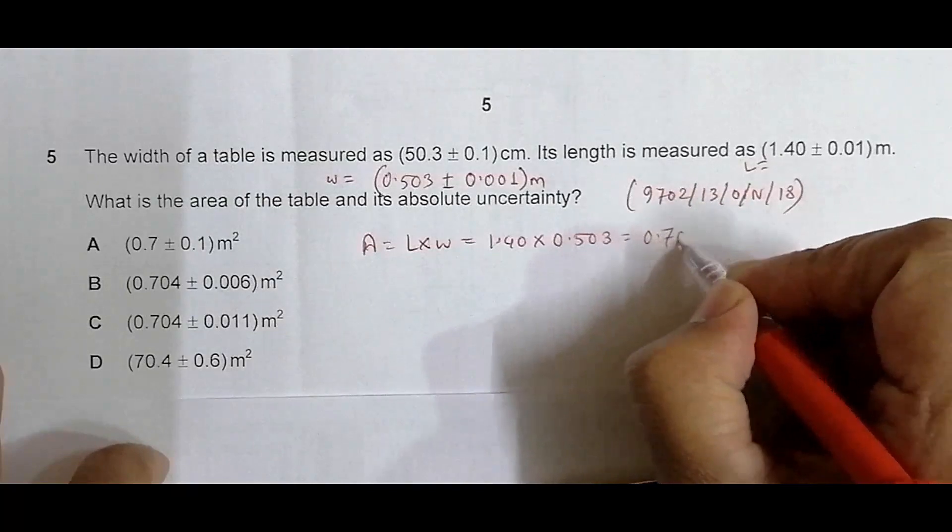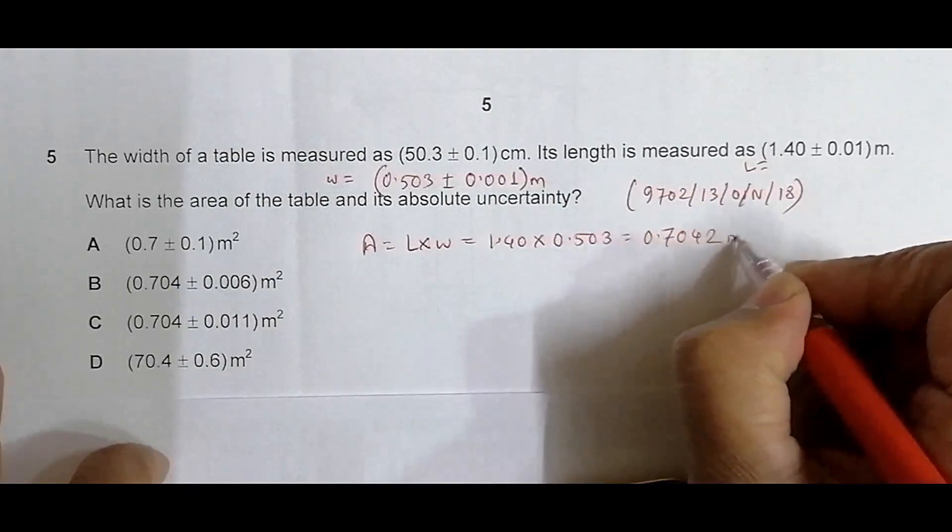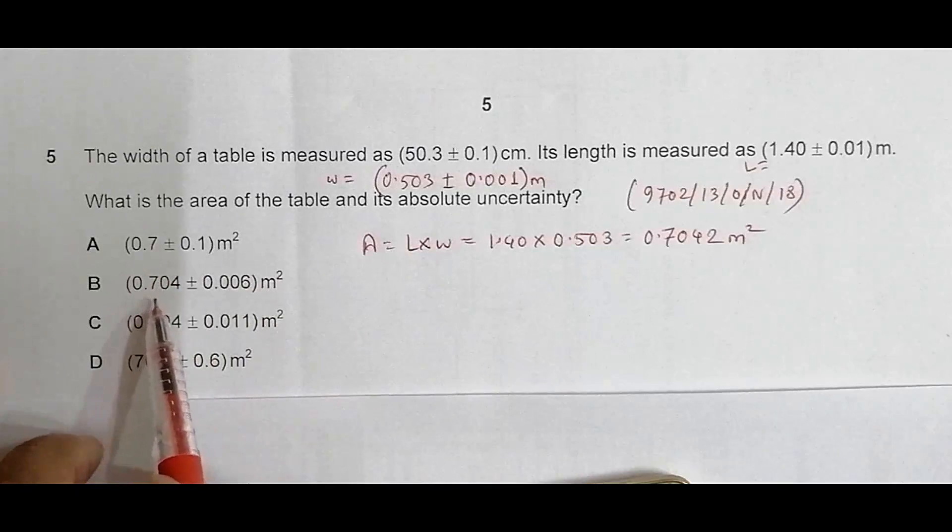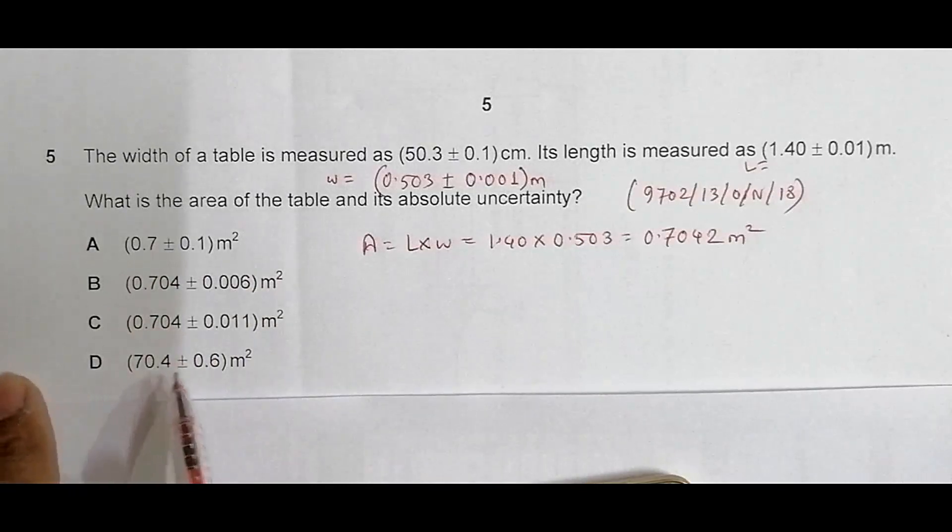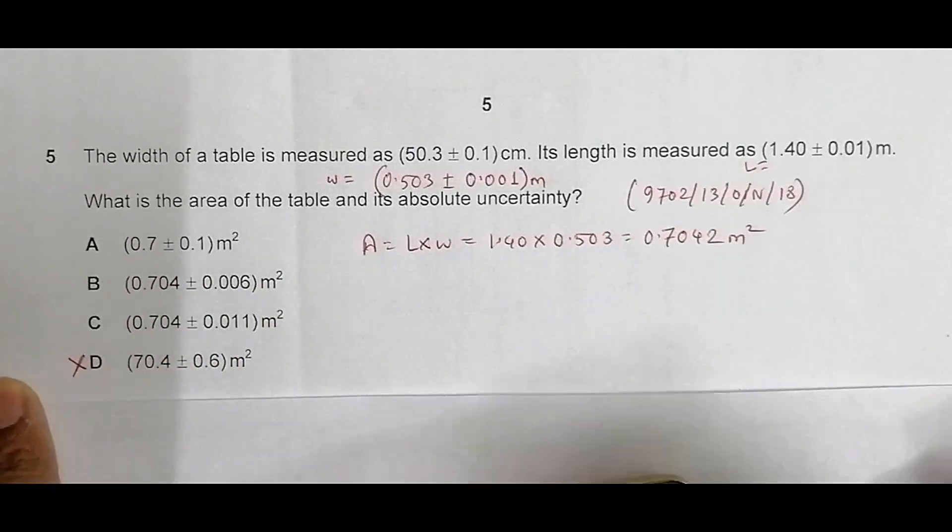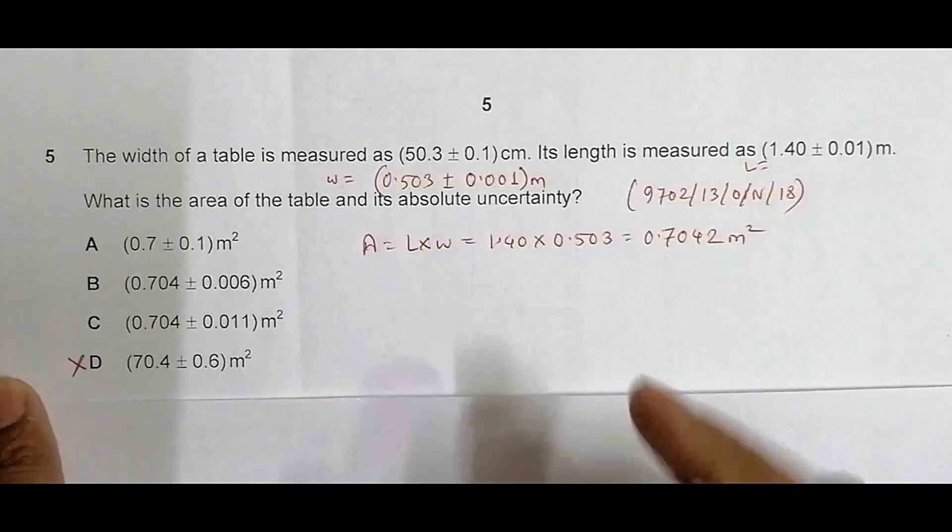Going through the values, what we have is in A 0.7, in B also 0.7, in C also 0.7, but in D it is 70.4. So D disqualifies. We still haven't found the uncertainty but still D has managed to disqualify.